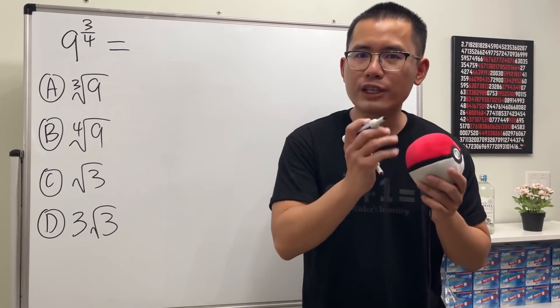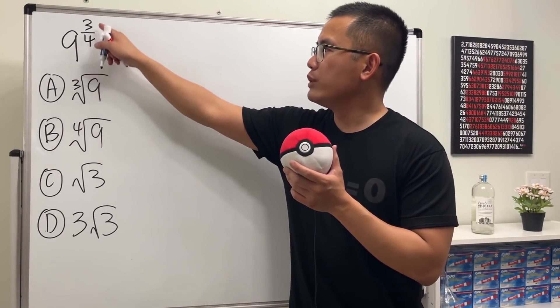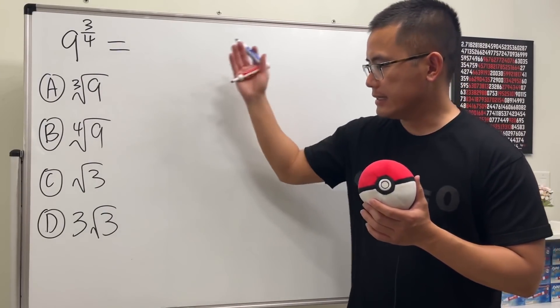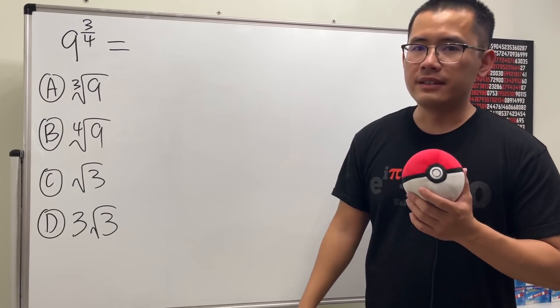When we have a number raised to a rational exponent like this, 9 to the 3/4 power, how are we going to change this into a radical form and then simplify it? Well, in fact, this is an SAT practice question.